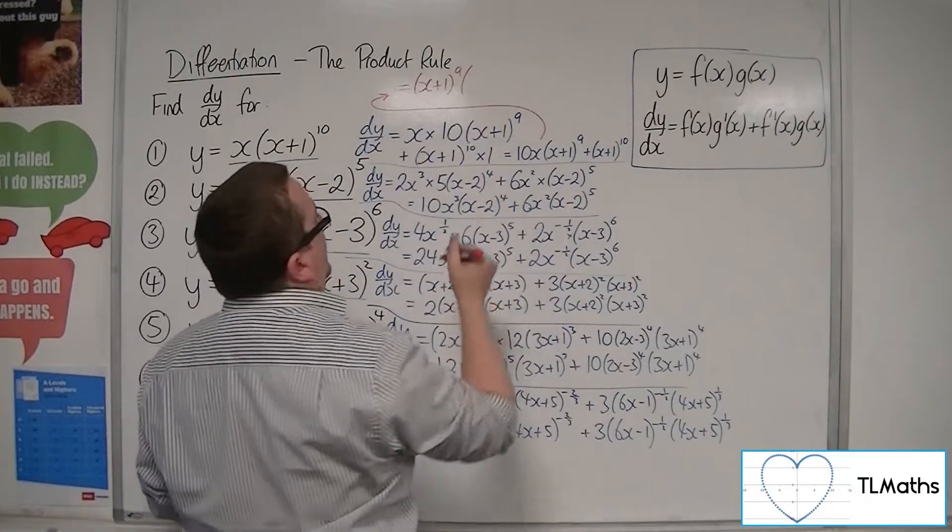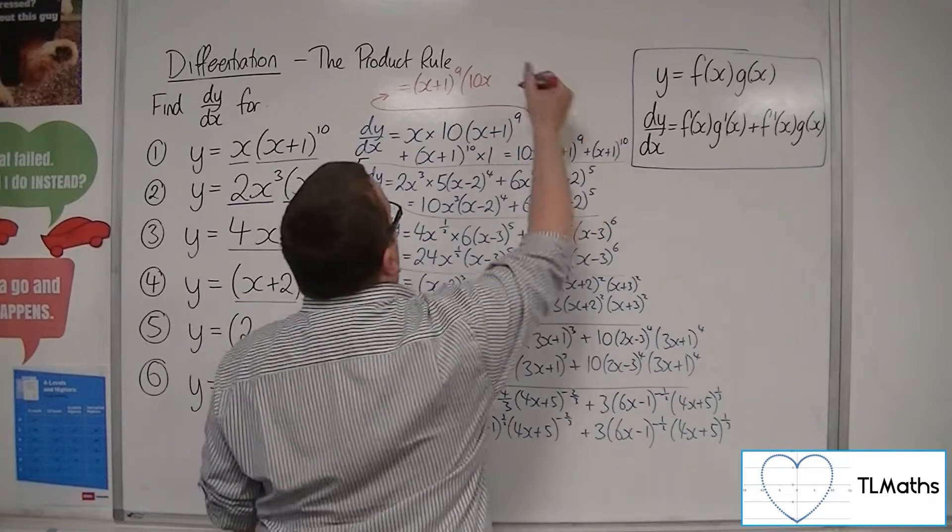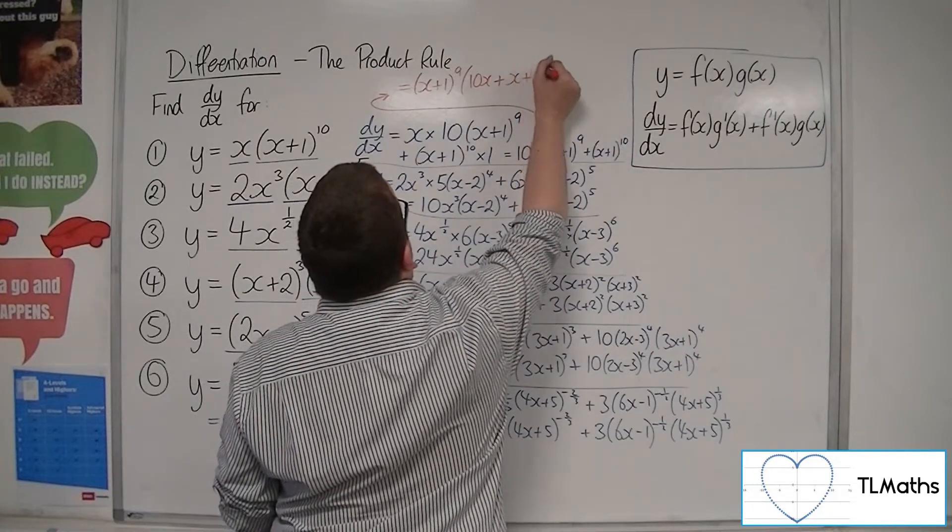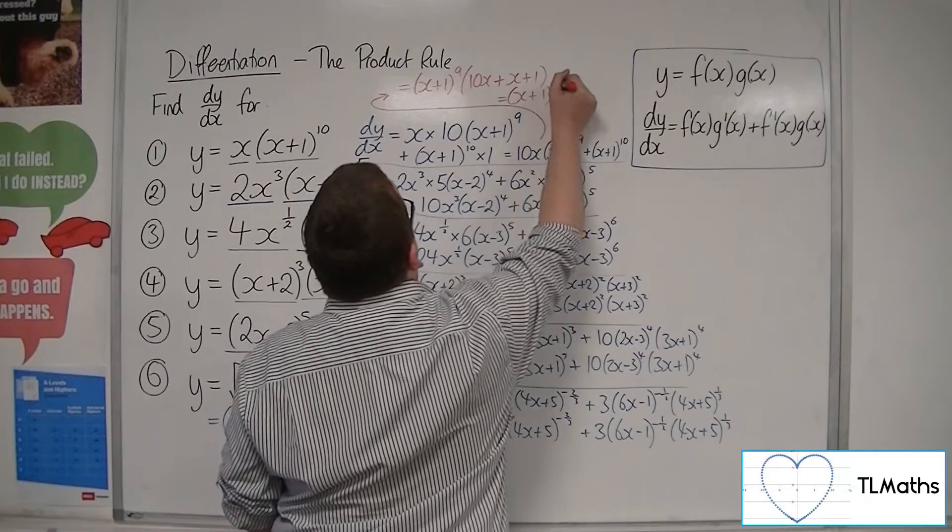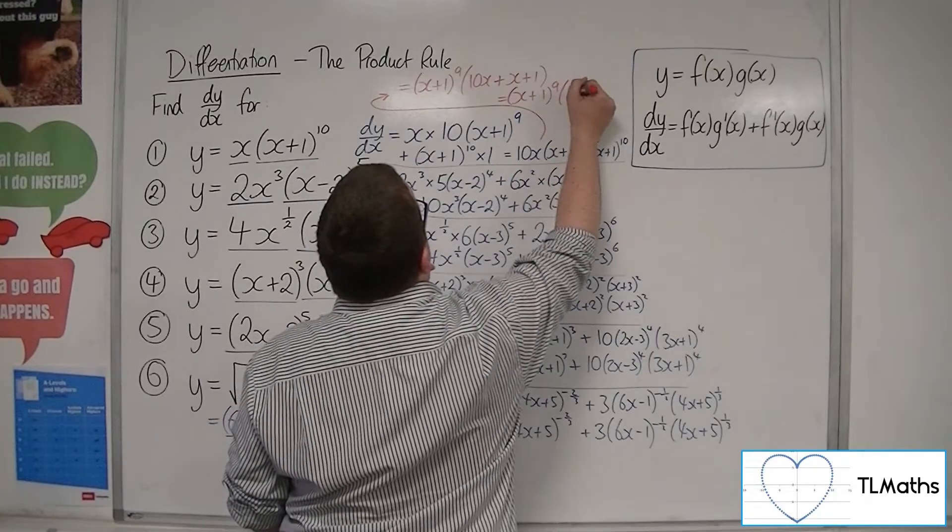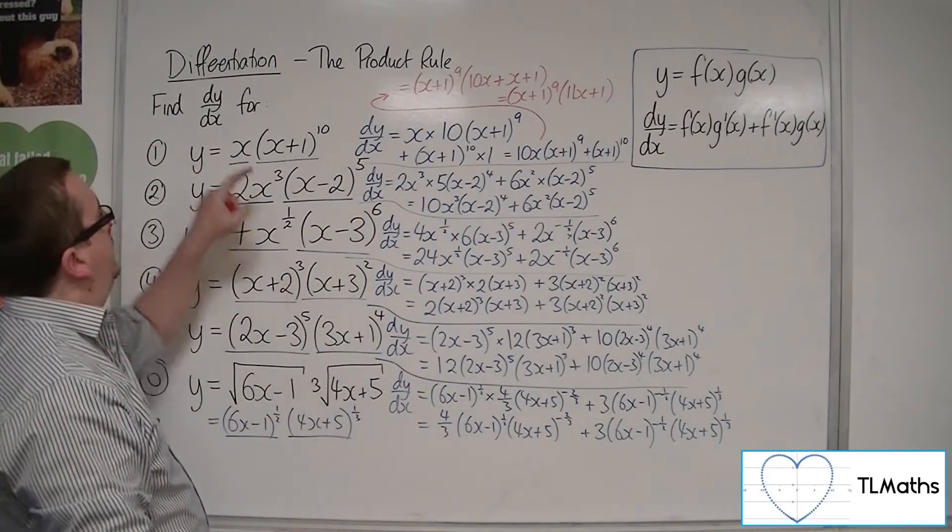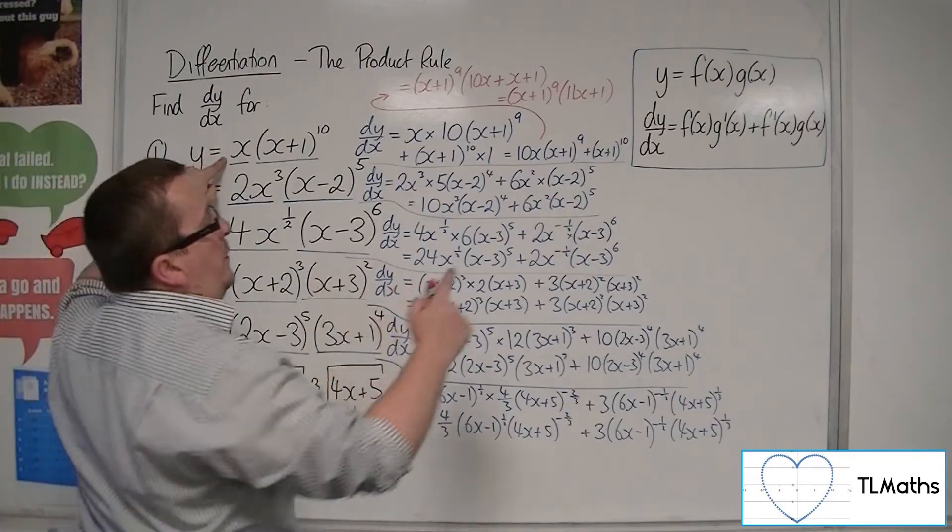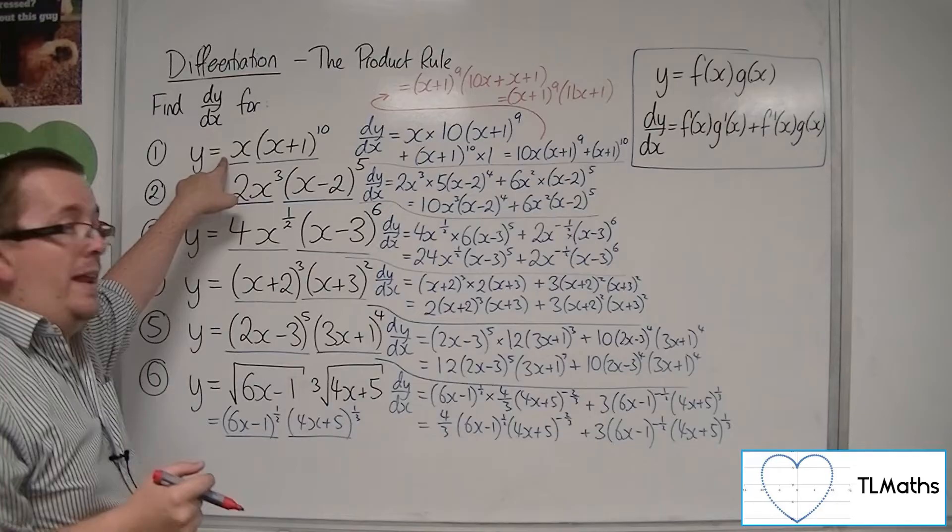And what I'd have left is the 10x from there and an extra (x+1) there. So I would have (x+1)^9 multiplied with 11x+1. So if I was asked to find the stationary points of this curve, I would know that they sit at -1 and -1/11.